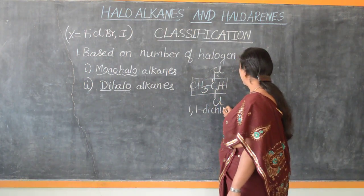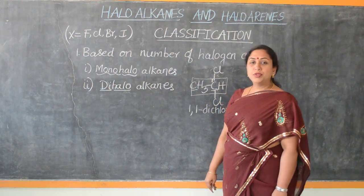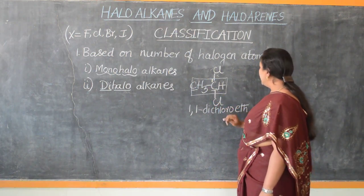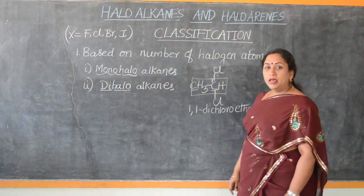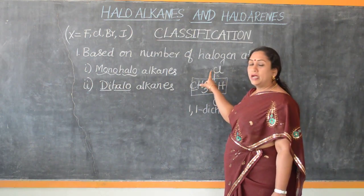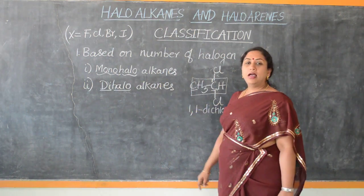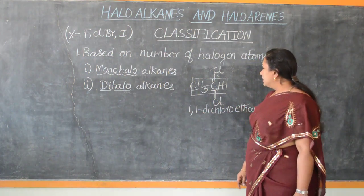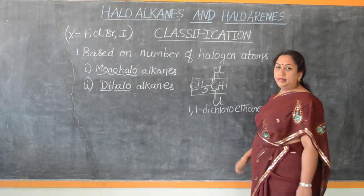Look at this example. It is dichloro, and it contains two carbon atoms. So the root word is 'eth', and because it is saturated, it is ethane. Organic compounds which contain two halogen atoms attached within the same molecule are referred to as di-haloalkanes. The name of this compound is 1,1-dichloroethane.